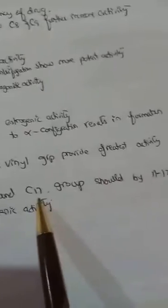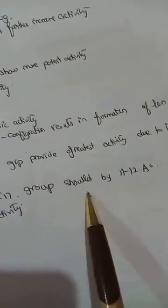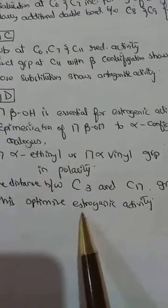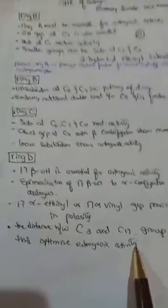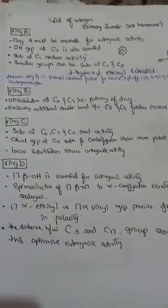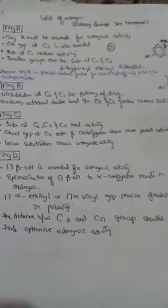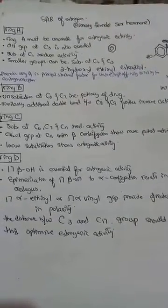The distance between the C3 and C17 groups should be 11 to 12 angstroms for optimized estrogenic activity. This is the whole SAR of estrogen according to each of its ring structures. Thank you.